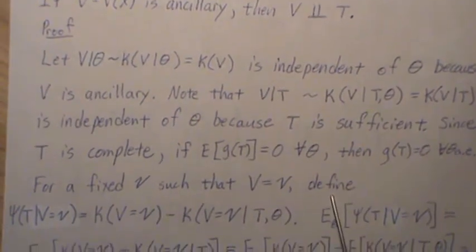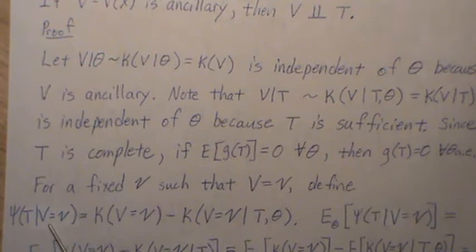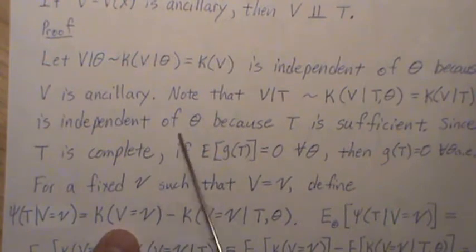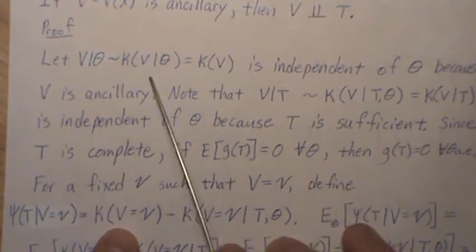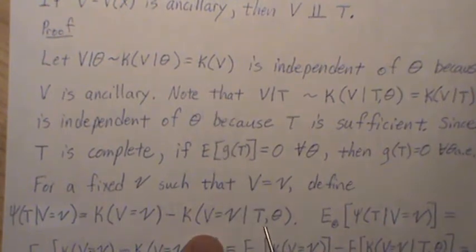We're going to define a function of t, and we're going to call it psi. So psi of t given v. We're going to let it be this function here, k of v. Remember k is the distribution of v. And this is going to be k given t.